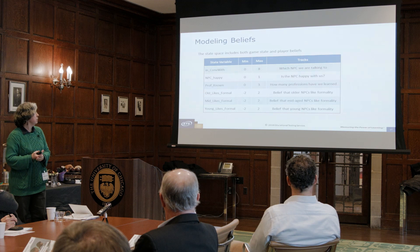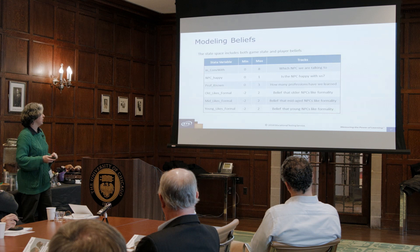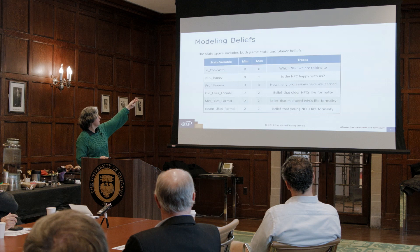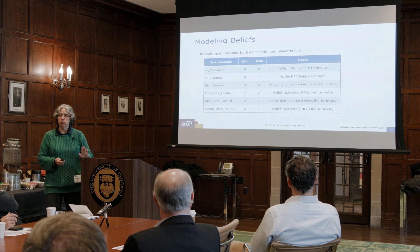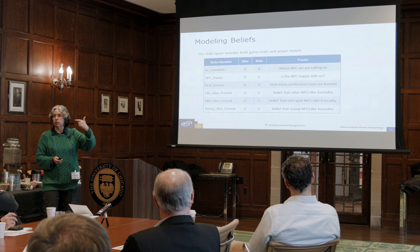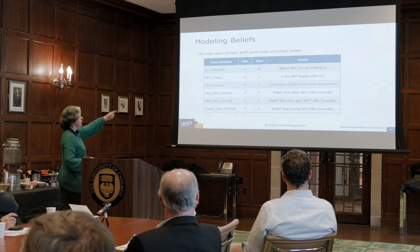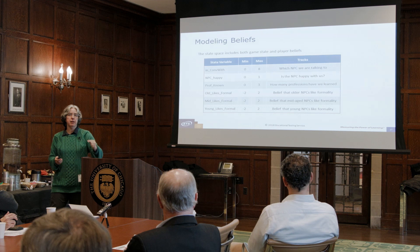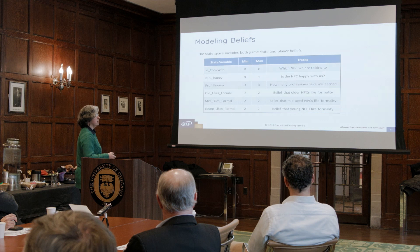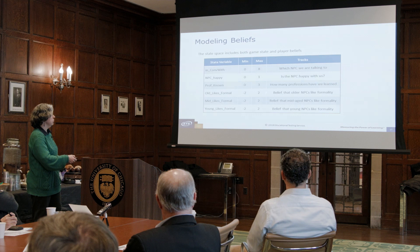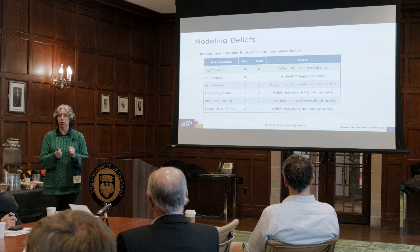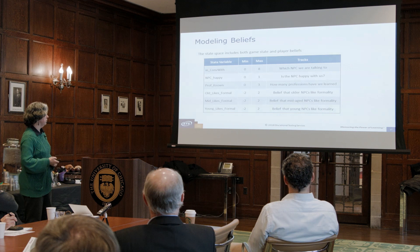I'm going to show you some details of the model — how I am modeling beliefs. This is my simplified state space. The first three state variables deal with what's going on in the game: who you're talking to, is that person happy, and how many professions have you learned so far. The last three variables track the players' beliefs about the different age classes. Negative two indicates they believe very strongly that this age class does not like to be treated formally; two means they believe strongly this age class wants to be treated formally; and zero means 'I don't know.'